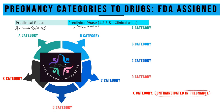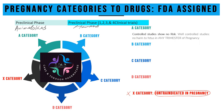Category X is derived from 'cross' and it is absolutely contraindicated in pregnancy. Category A: well-controlled studies have shown no risk — well-controlled studies have shown no harm to the fetus in any trimester of the pregnancy.